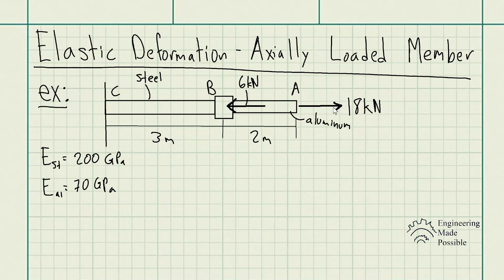You can see the external loads being applied at the end, 18 kilonewtons and at the coupling B, 6 kilonewtons. We have the appropriate meters and the modulus of elasticity of the materials as well. Now, one thing to keep in mind is we could actually solve for the total deformation, which we're asked to solve for the deformation at this point B as well as at point A.